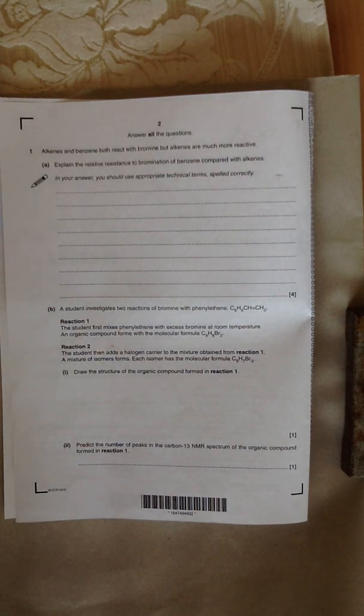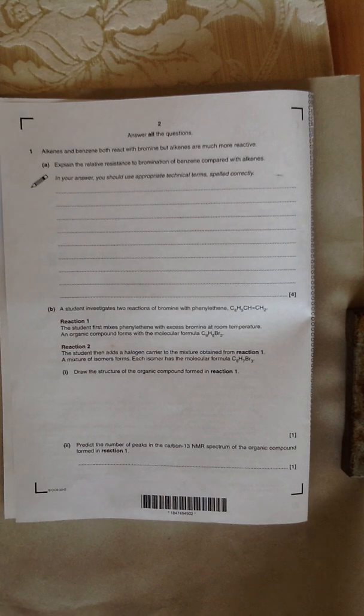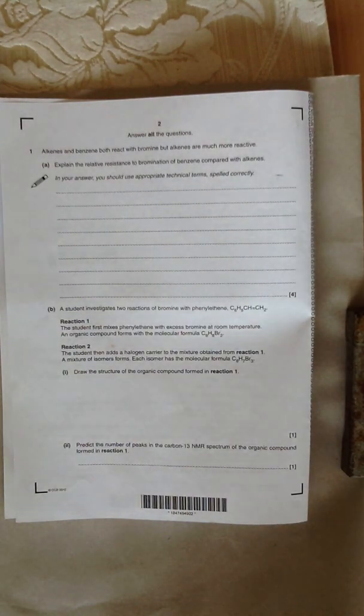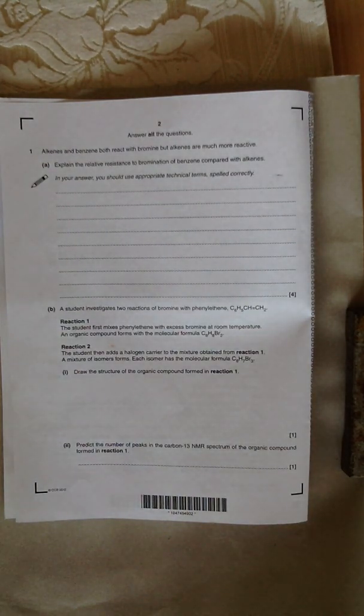This is a question taken from the OCR June 2012 F324 rings, polymers and analysis paper. This is a typical question that will ask you to compare the bonding in benzene to an alkene and then to talk about the difference in their reactivities.